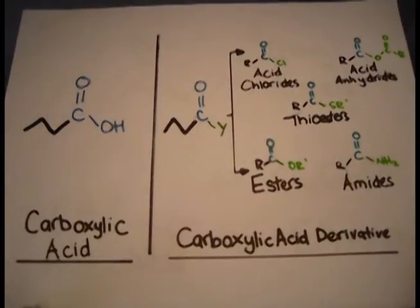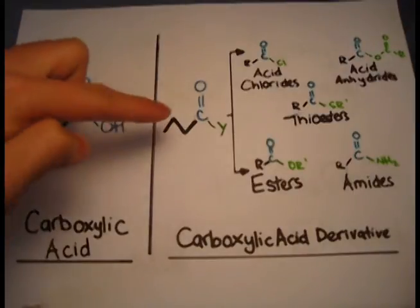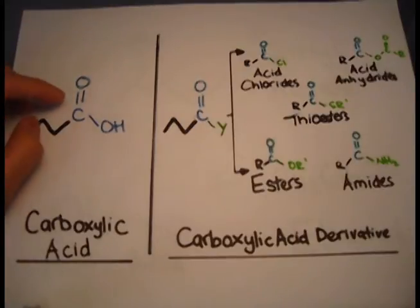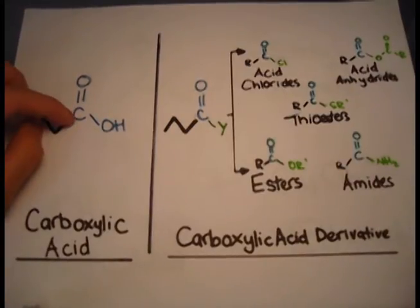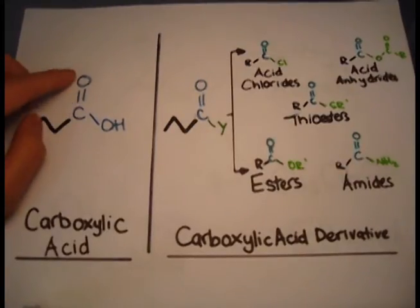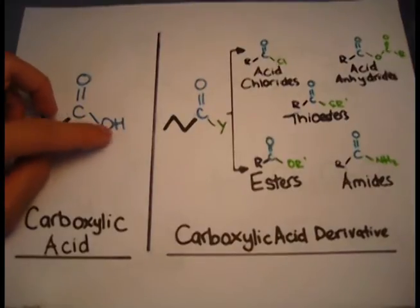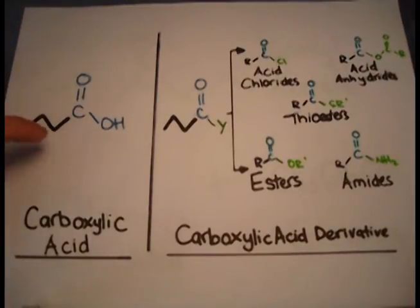So what makes a carboxylic acid a carboxylic acid? Well, if you look over here, this blue group is the defining characteristic of a carboxylic acid: the carbonyl group — that's a C double bonded to the O — and the C bonded to the OH. This in itself is carboxylic acid. If you see it on a molecule, that's it.